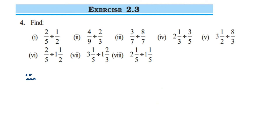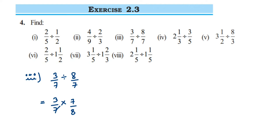Third question: we have 3 by 7 divided by 8 by 7. The first number remains the same — 3 by 7. Division becomes multiplication; take the reciprocal of the second number, which will be 7 by 8. Now cancel the numbers that can be cancelled — 7 can be cancelled — so this equals 3 by 8.